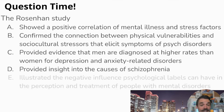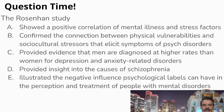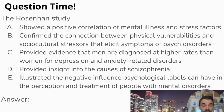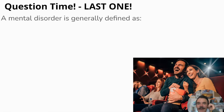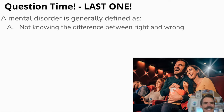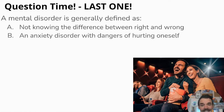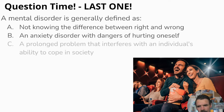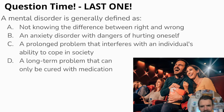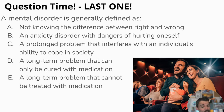The answer is E — Rosenhan's study illustrates the negative influence psychological labels can have on the perception and treatment of people with mental disorders. Last question: A mental disorder is generally defined as — not knowing right from wrong, an anxiety disorder with dangers of hurting oneself, a prolonged problem that interferes with an individual's ability to cope in society, a long-term problem only cured with medication, or a long-term problem that cannot be treated with medication?